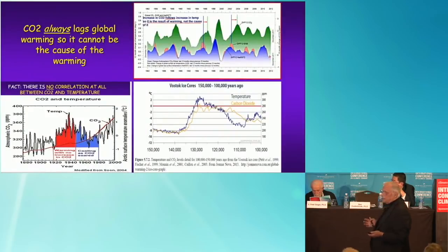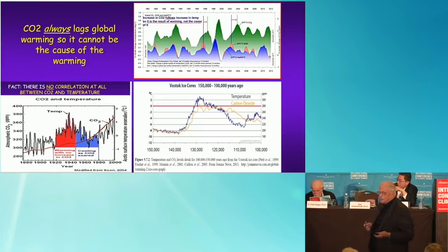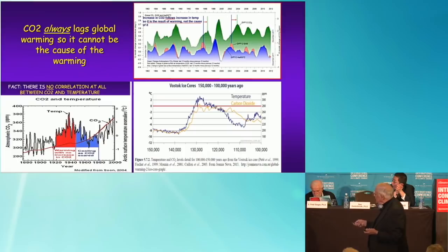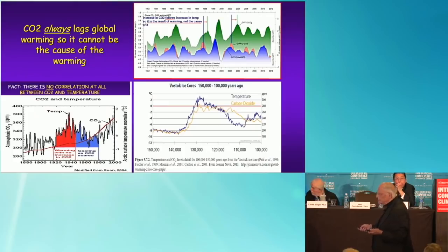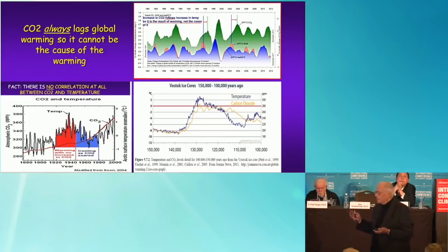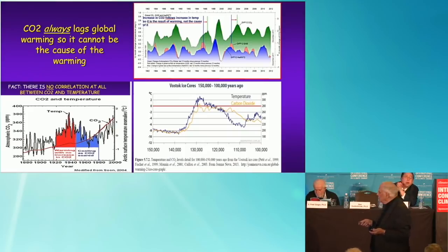The third line of evidence is that CO2 always lags global warming, so it cannot be the cause of global warming. We know that from ice cores — these are from the Antarctic ice sheet. The blue line here is temperature and the yellow line is carbon dioxide, and notice that carbon dioxide always follows the rise in temperature; it always lags temperature. So CO2 cannot be causing the warming, and that's true of each ice age in the past.